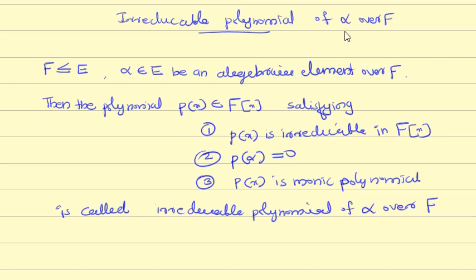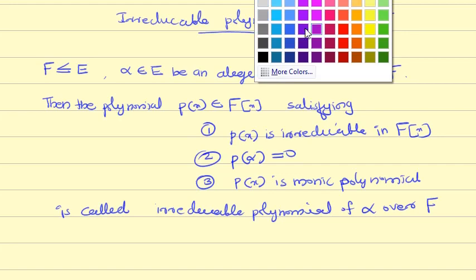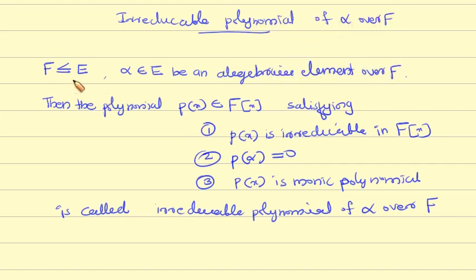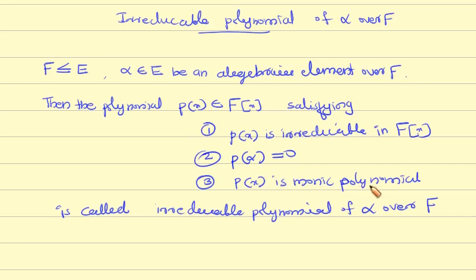Irreducible polynomial of alpha over F. Let F be less than or equal to E, and alpha belongs to E, be an algebraic element over F. Then the polynomial p(x) satisfying: p(x) is irreducible in F[x], p(alpha) equals zero, and p(x) is a monic polynomial — then p(x) is called the irreducible polynomial of alpha over F.